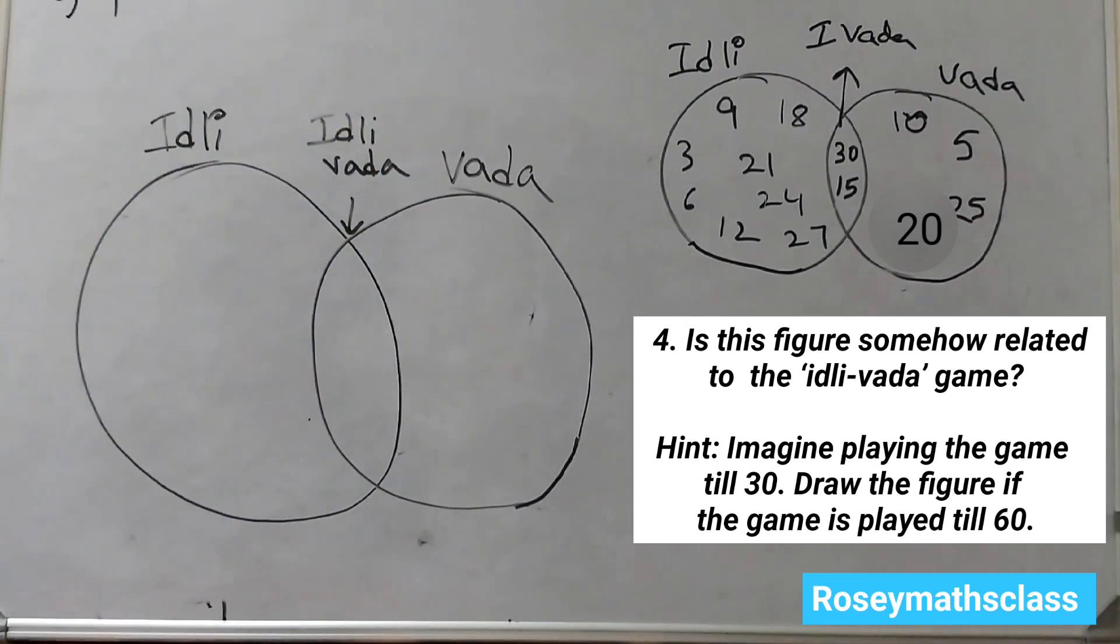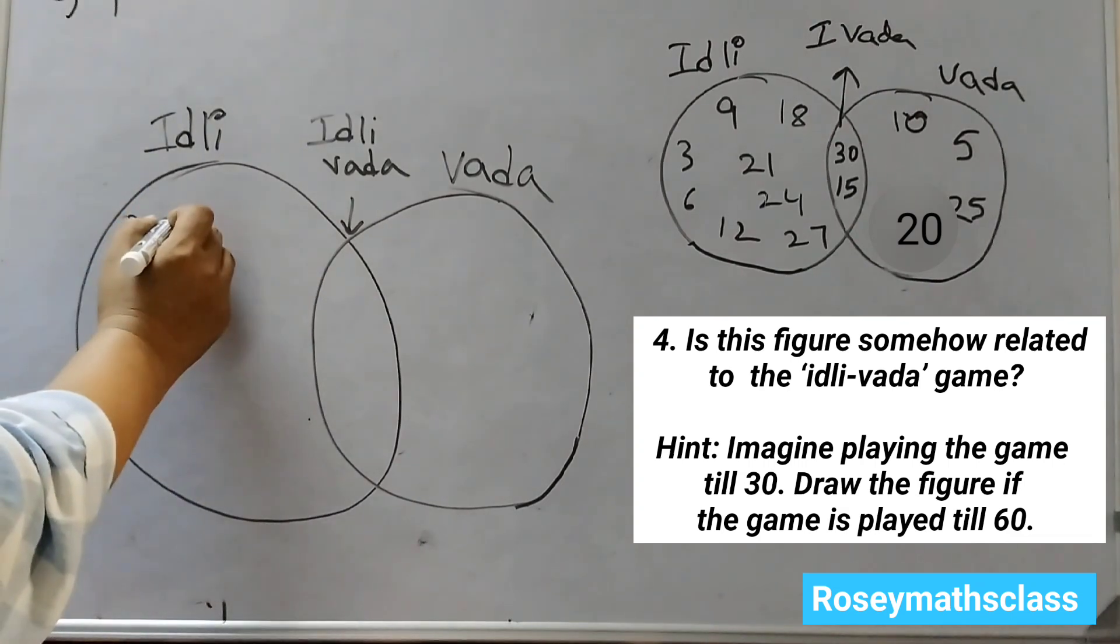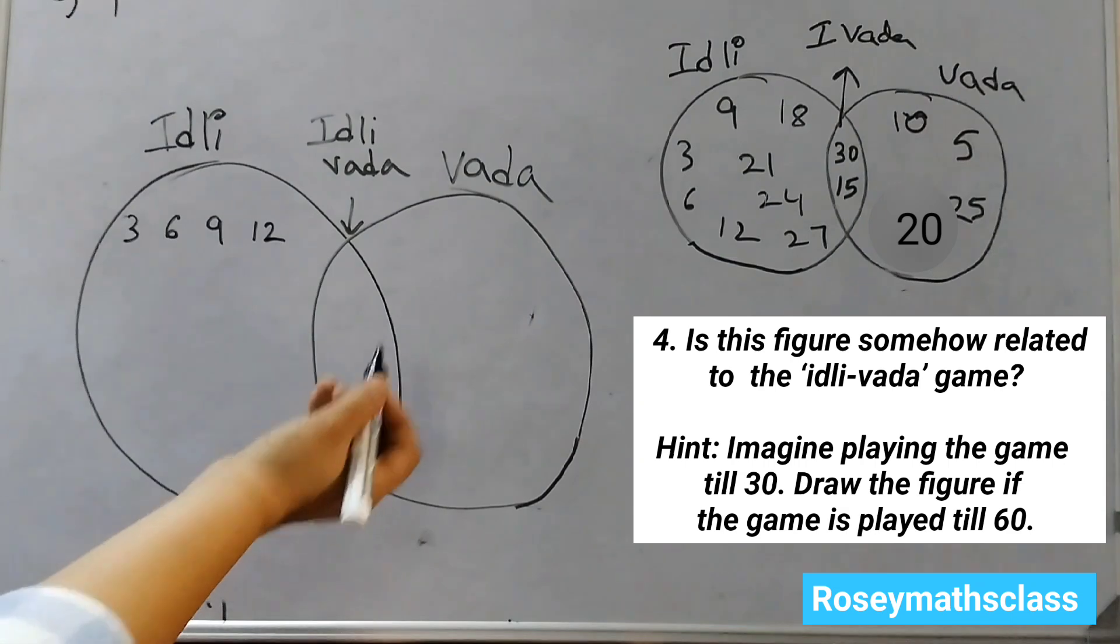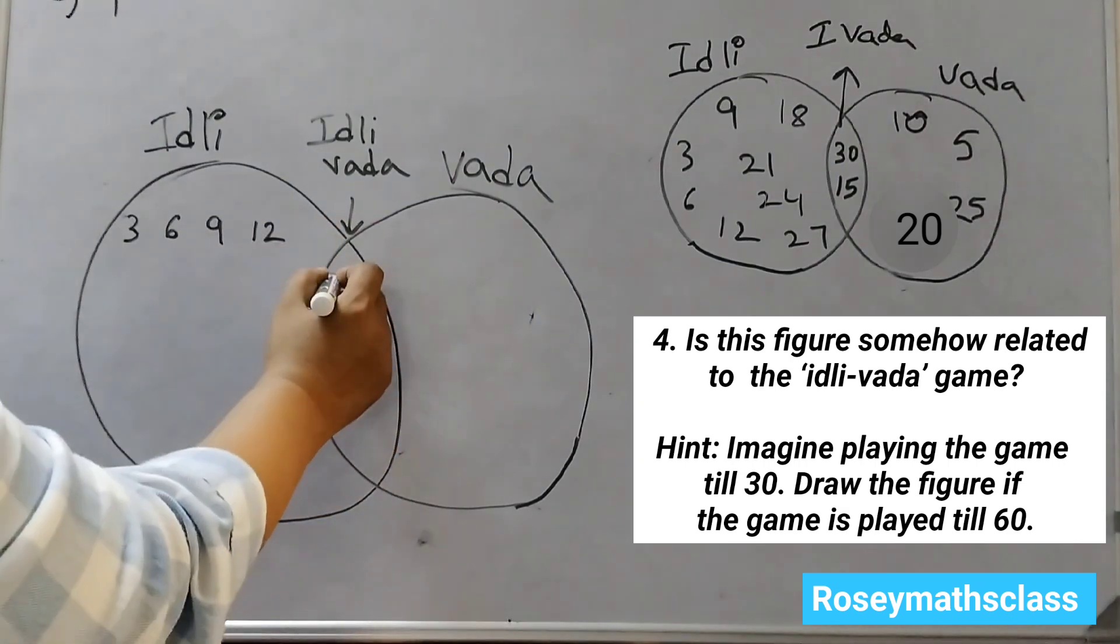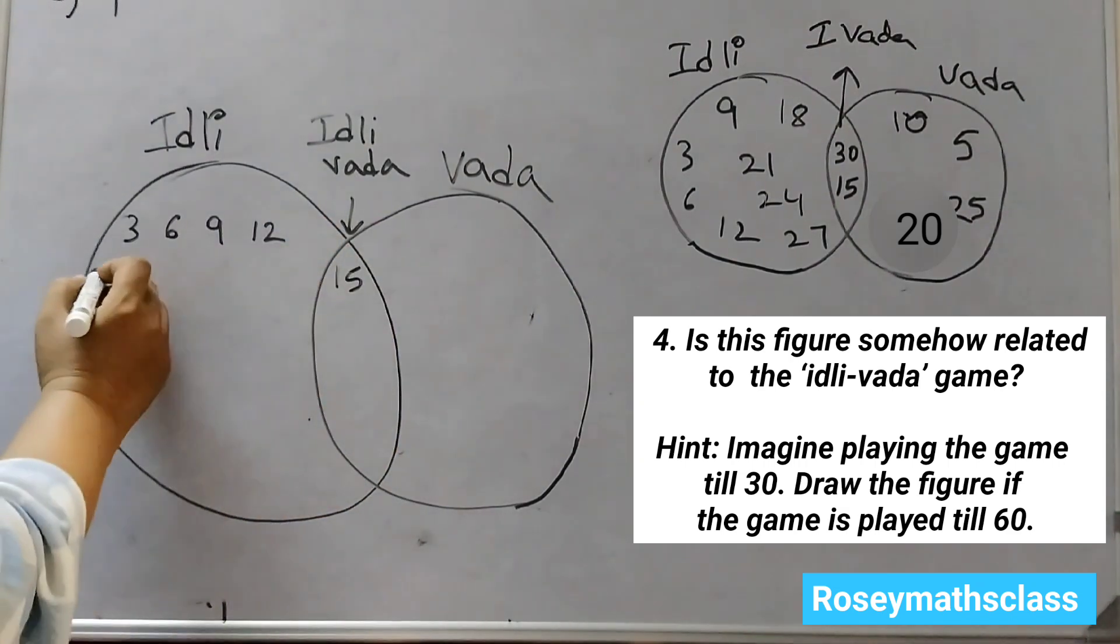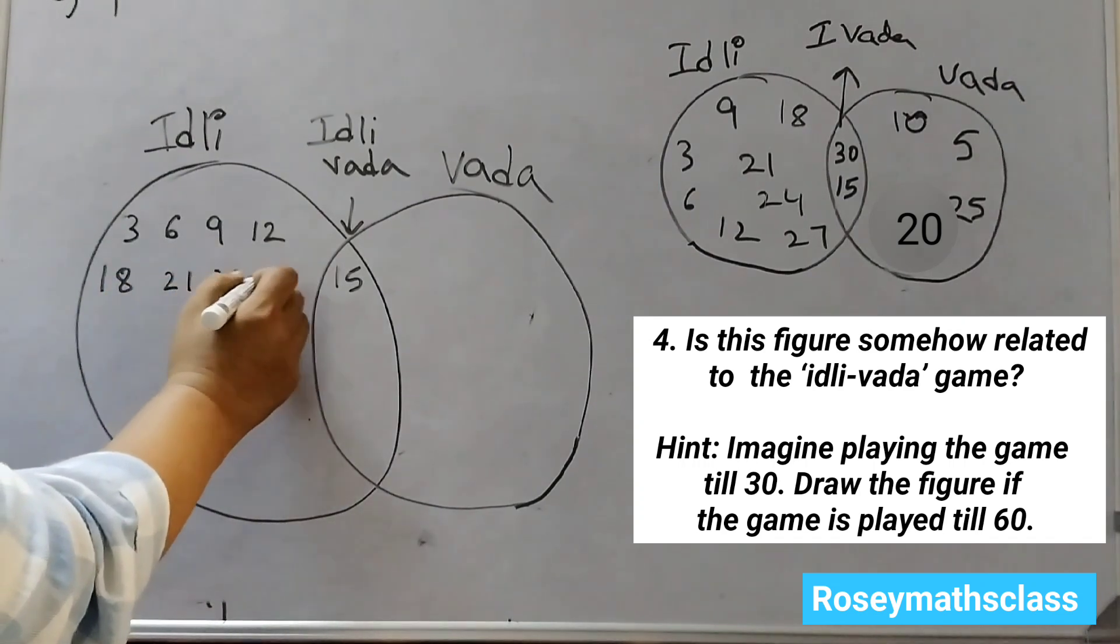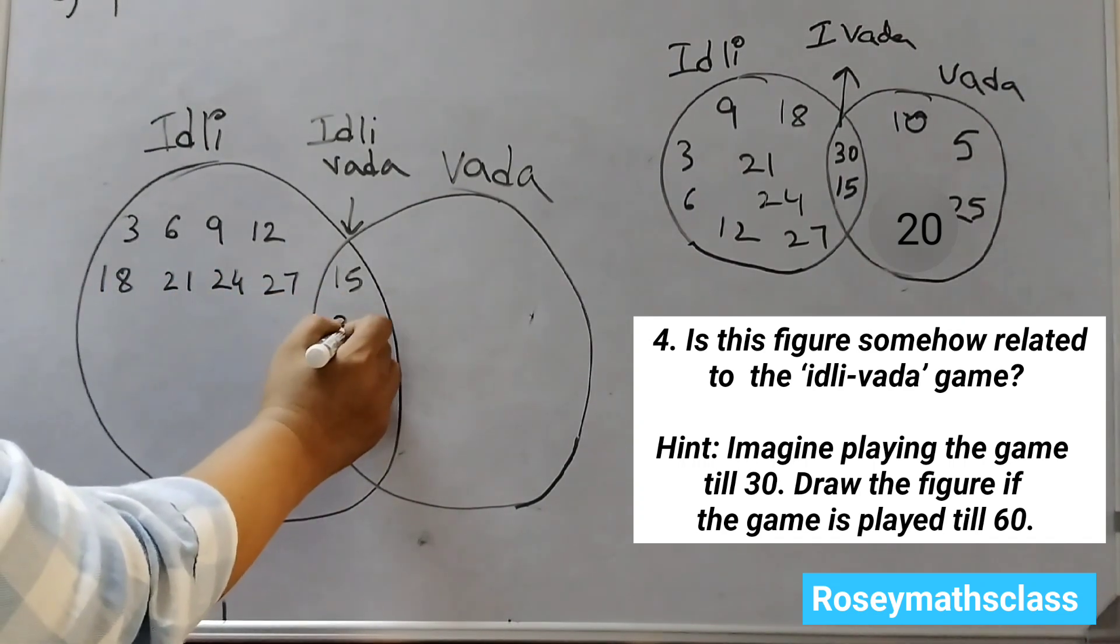Let us write the multiples of 3. 3 ones are 3, 3 twos are 6, 3 threes are 9, 3 fours are 12, 3 fives are 15. 3 and 5 both are coming, so 15 will come here. 3 sixes are 18, 21, 24, 27. 30 would come here.